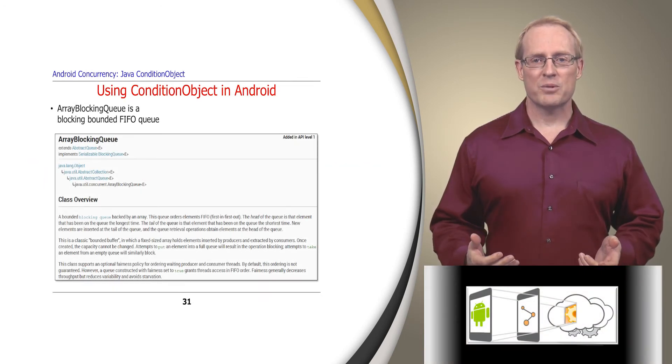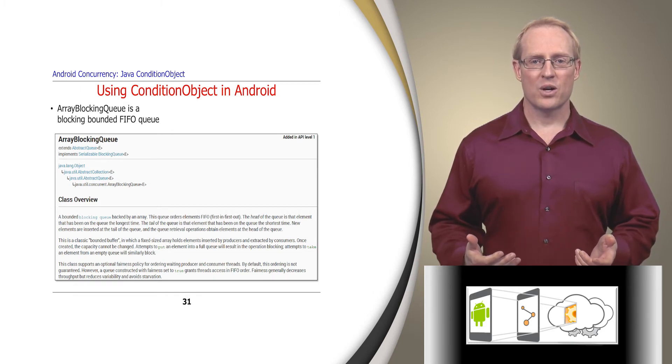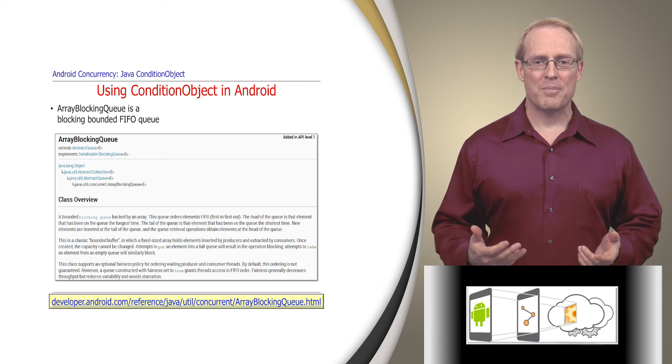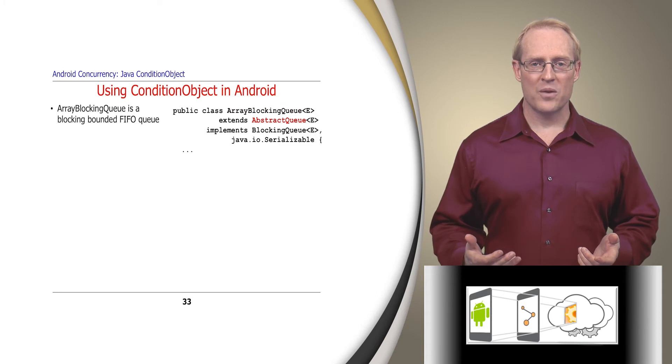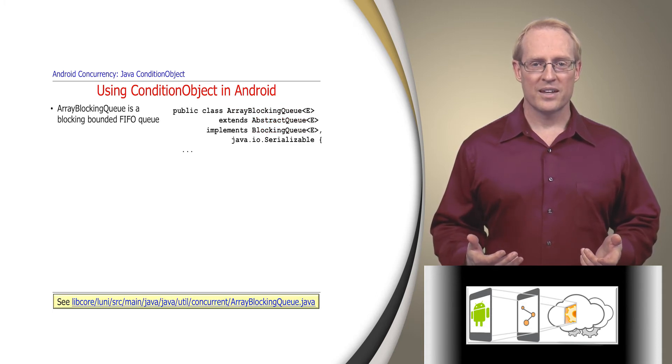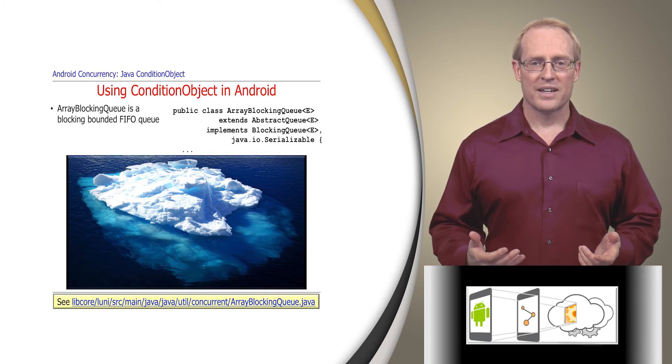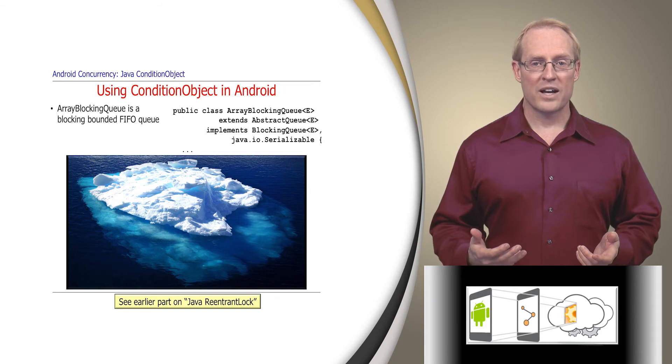To show how condition objects are used in Android, we'll analyze an implementation of array-blocking-queue, which is a blocking-bounded queue that stores its elements in first-in, first-out, or FIFO order. Array-blocking-queue extends abstract-queue and implements blocking-queue, as shown at this path name. We don't analyze every detail of this code, just the parts we need to explain how conditioned objects work.